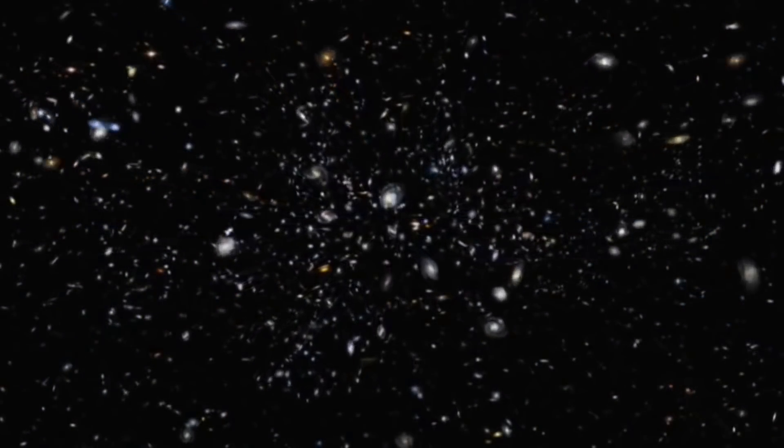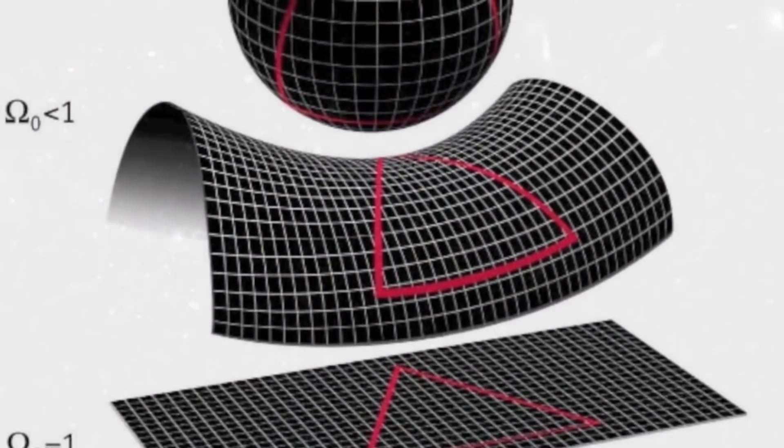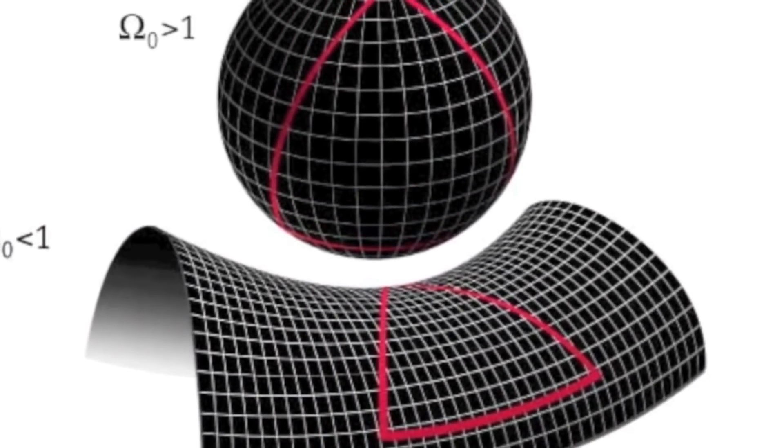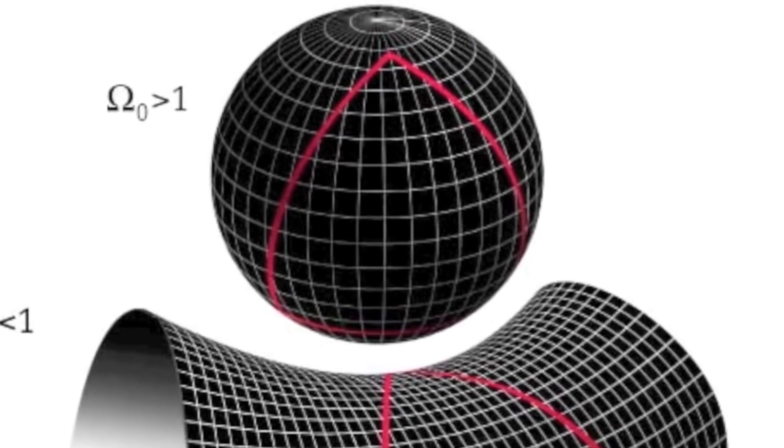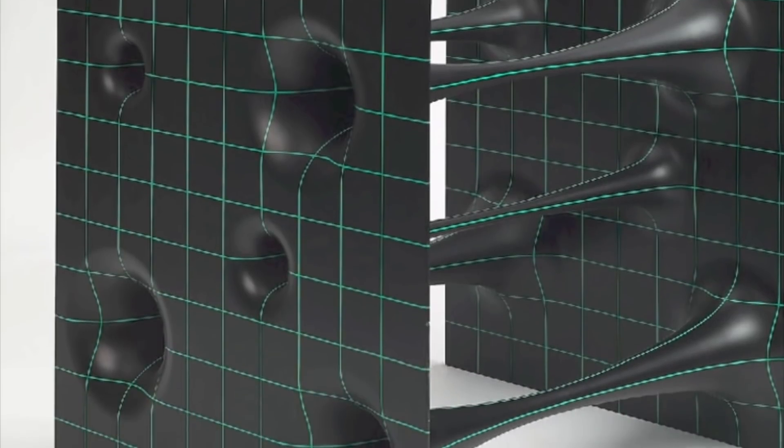Not necessarily. Space can be flat and infinite, or it could be flat and have an edge to it. Or, even stranger, it could be flat and still loop around itself.